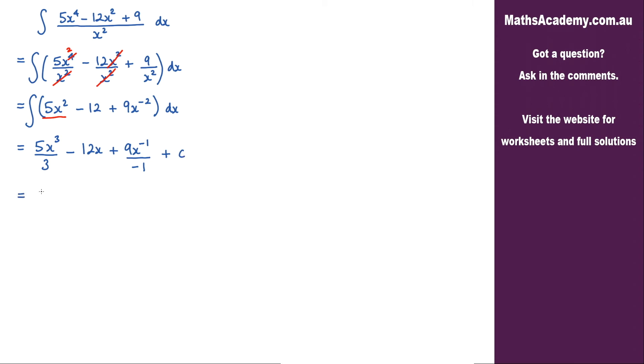Now we can do a little bit of tidying up here. We've got the 5x cubed over 3 minus the 12x. Now we've got this negative here, so negative 1. So I can change this to a negative. We've got the 9, and x to the power of minus 1 means that we've got 9 over x, and just add on the constant of integration.